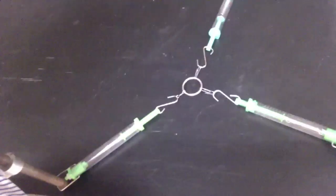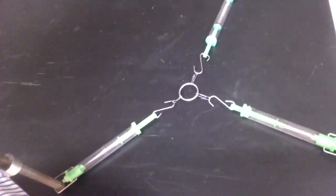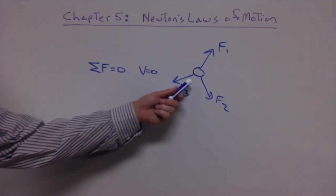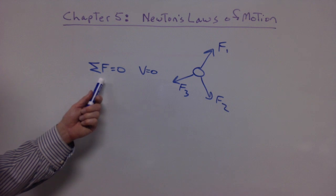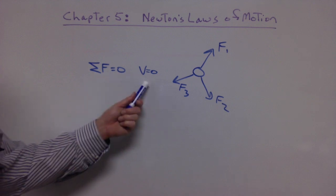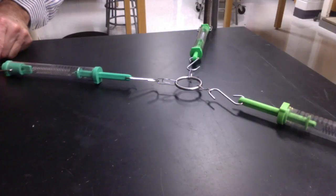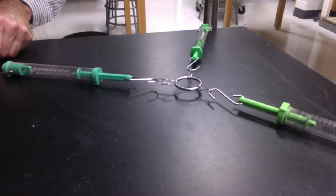Remember the force board lab? The sum of the forces was zero, and we noticed that the object was not moving. All the forces acting on the ring added up to zero when we did the math. The object wasn't moving, so that was our introduction to statics. And what did we notice if we let go of one of the spring scales? We had acceleration.